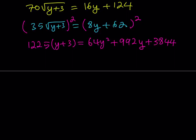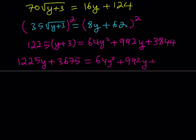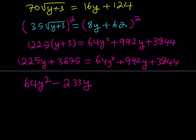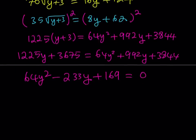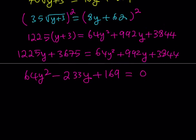Let's go ahead and distribute: 1225y plus 3675 is equal to 64y squared plus 992y plus 3844. Putting everything on the right-hand side to get a quadratic: 64y squared, subtract 1225 from 992 to get negative 233y, and subtract 3675 from 3844 to get 169, equals 0. Now at this point it may look like a perfect square like (8y minus 13) squared, but that's not the case. One thing to notice is that if you add the coefficients, you get 0, which means y equals 1 is a possible solution.